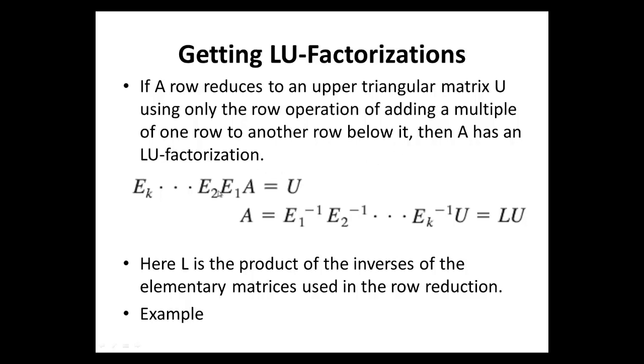If that is the case, then E_k times...times E_2 times E_1, these are the elementary matrices created from A to the upper triangular matrix U. So, the product of these elementary matrices times A equals U. We saw in Lecture 11 that these elementary matrices have inverses and the inverses are also elementary. So, if I multiply both sides by the inverses of these elementary matrices, I end up with A equals E_1 inverse, E_2 inverse, E_k inverse times U equals LU.